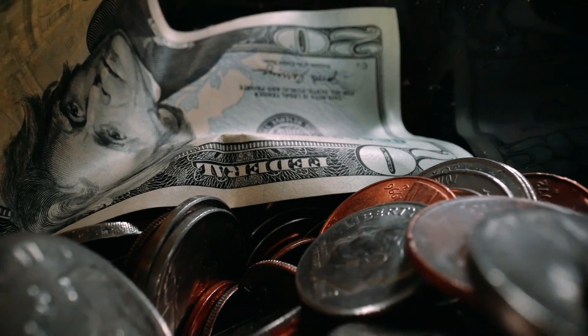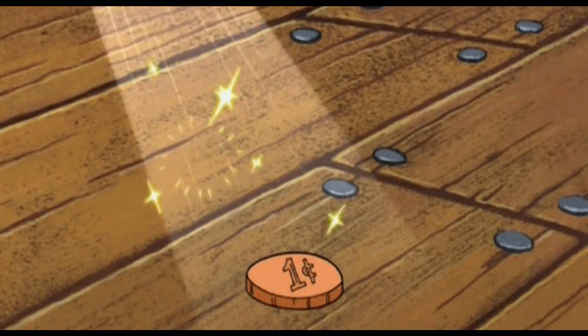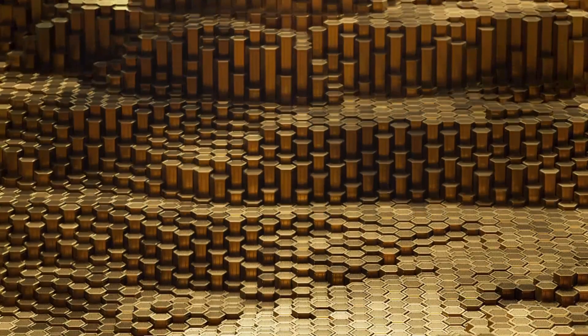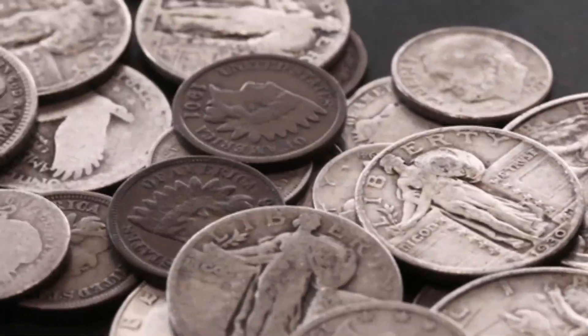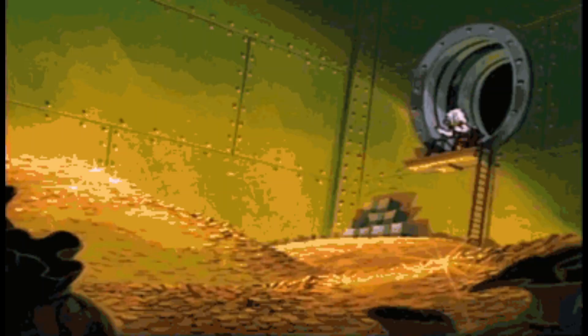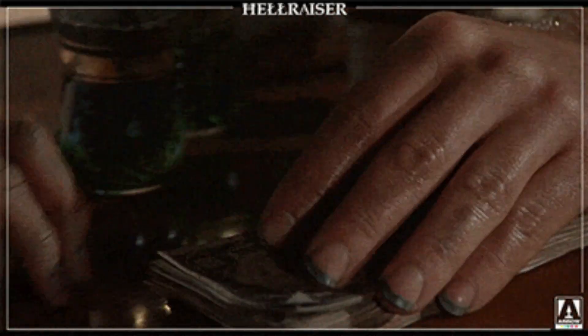Metal coins were first introduced in Lydia, now Turkey, in the 7th century BC. Coins standardized the weight and purity of money, making it easier to use in trade and commerce. Coins were made of precious metals like gold and silver, and had an intrinsic value that made them valuable to trade.